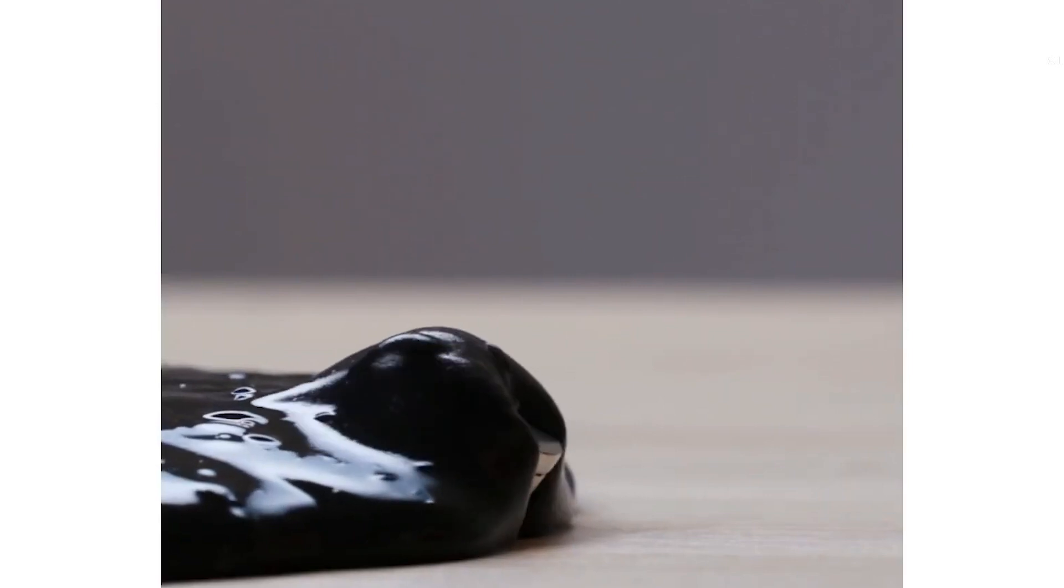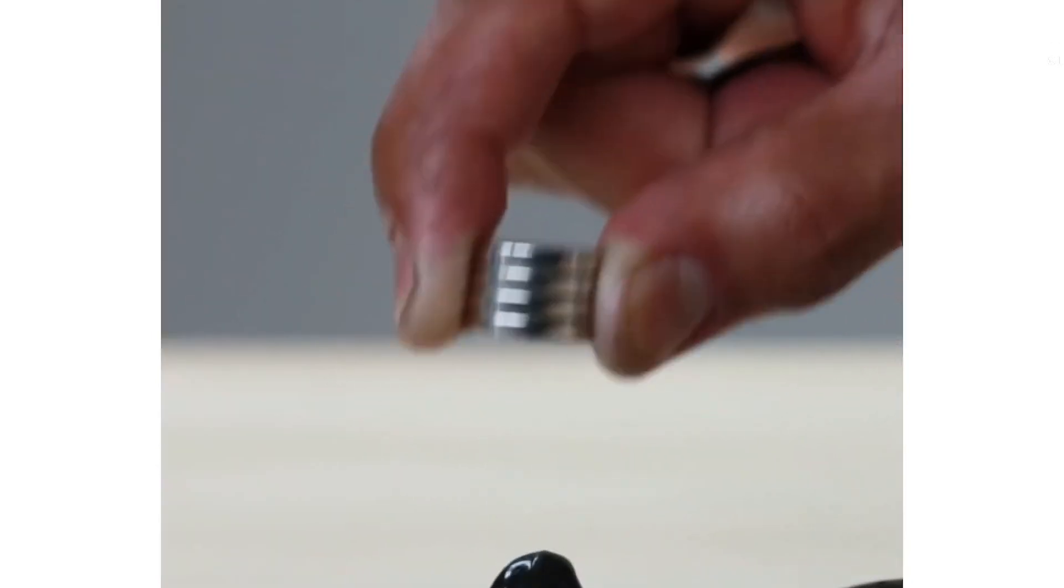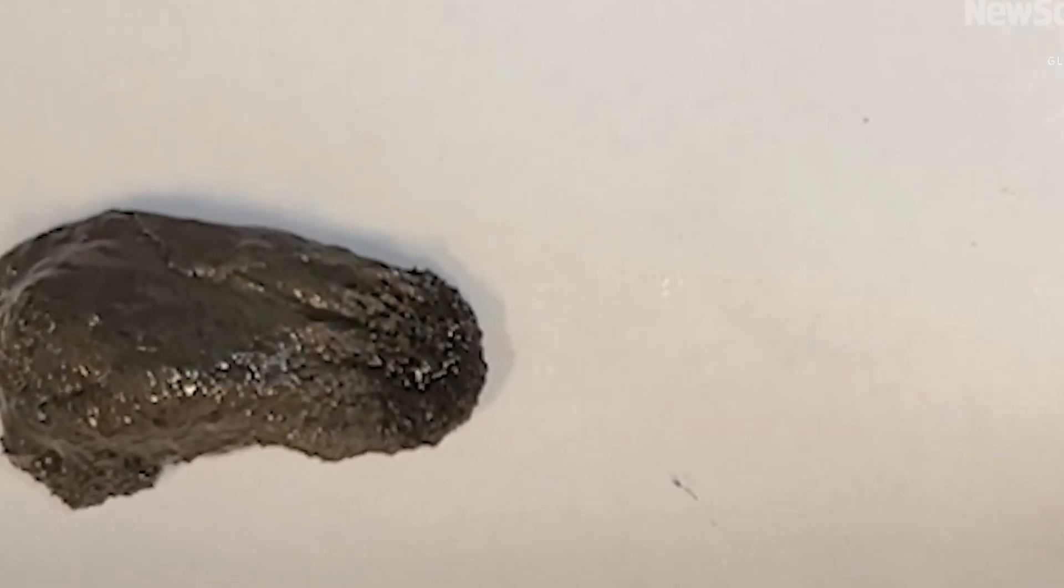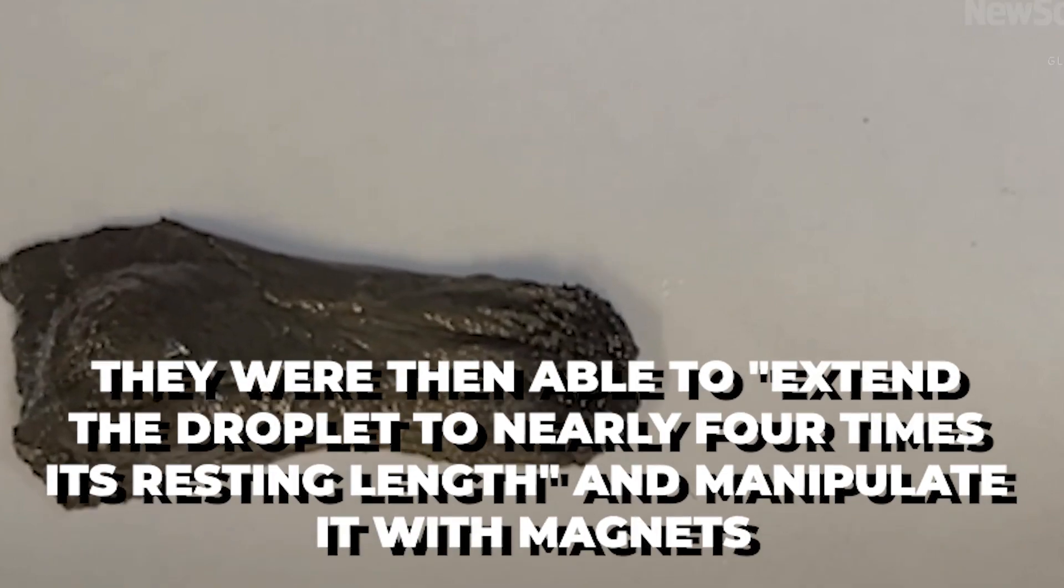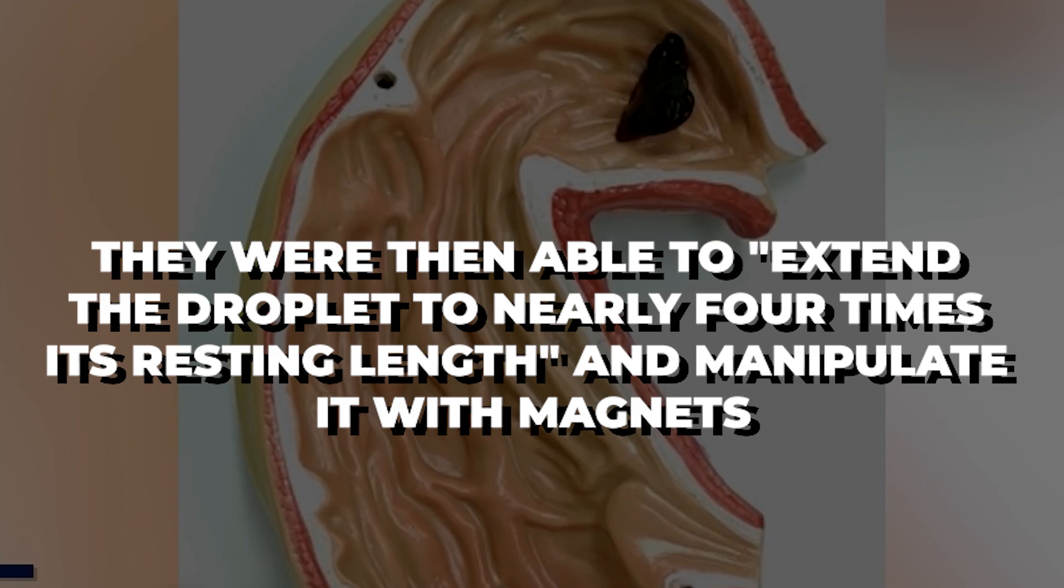However, the researchers, including the study's primary author, Lang Ho, added iron and nickel to the solution and a tiny aloe bathed in hydraulic acid, which reduces the surface tension. They were then able to extend the droplet to nearly four times its resting length and manipulate it with magnets.